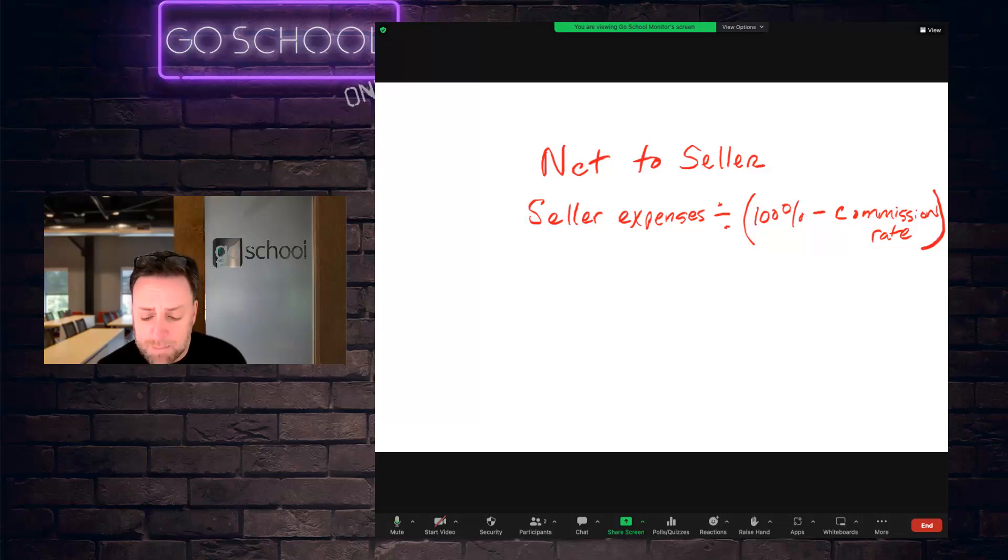divided by 100% minus the commission rate. 100% minus whatever commission percentage is indicated in the problem. And then that's going to equal the sales price. That is your formula. So again, seller expenses divided by 100% minus the commission rate equals the sales price, which in this question, that's what it's asking us, is what is the sales price?